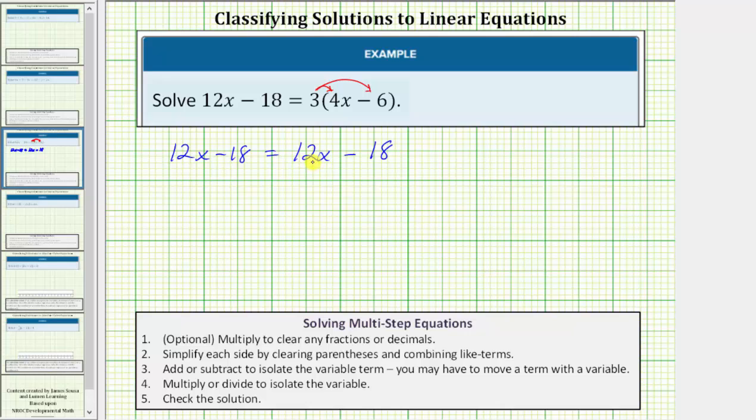But if we didn't notice this, the next step would be to add or subtract to isolate the variable term. Remember our goal here is to isolate the variable, and right now we have variable terms on both sides of the equation. So if we wanted to undo the positive 12x on the right side of the equation, we would subtract 12x on both sides. Let's go ahead and do that.